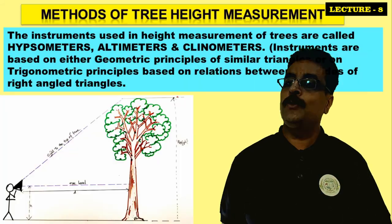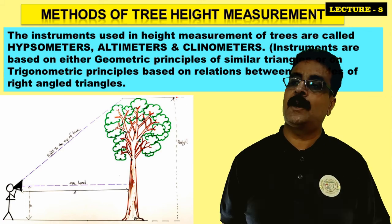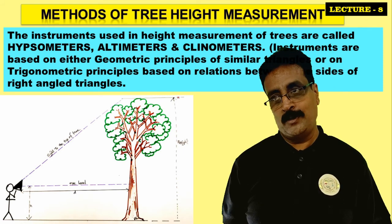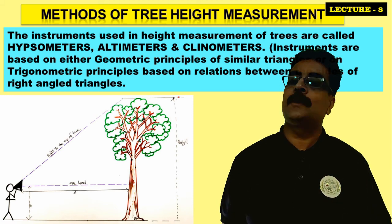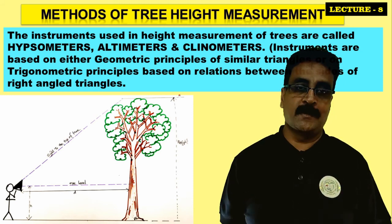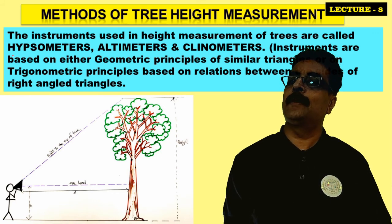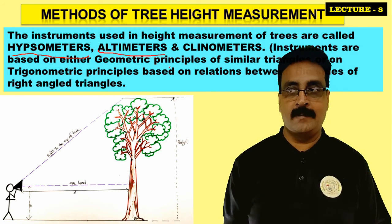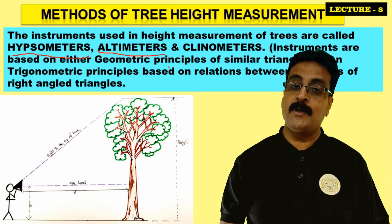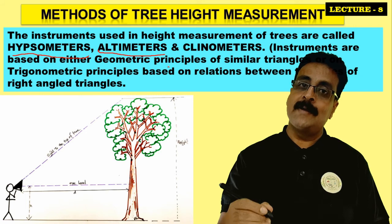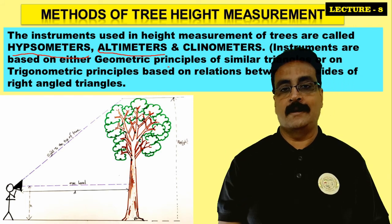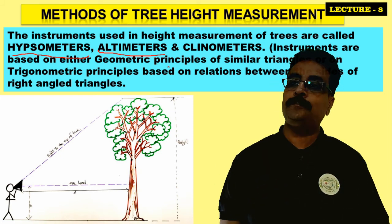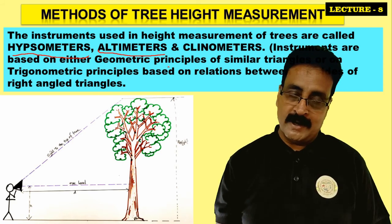Instruments used in height measurement are called hypsometers, altimeters, or clinometers. Generally in many exams, objective type questions ask what hypsometers are — hypsometers are instruments for measuring height. Altimeters and clinometers are also used for height measurement, but generally the altimeter is for measuring altitude and the clinometer is for measuring the angle of inclination.